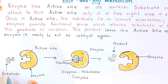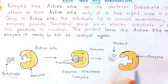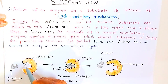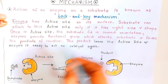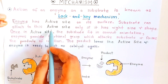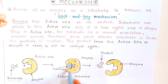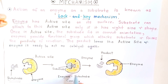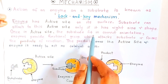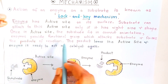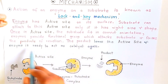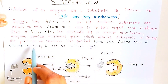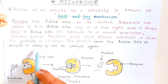The enzyme remains as it is — the lock is unchanged while the key is broken. The substrate is converted into two products and the enzyme remains without change. The enzyme has an active site on its surface. The substrate can attach to this active site only if it has the right size. If the size matches, it will attach; otherwise it will not attach to the enzyme. Once the substrate fits in the correct orientation into the active site, the enzyme provides a functional group which attaches to the substrate and forms the product of the reaction. The substrate is converted into product and the product leaves the active site.